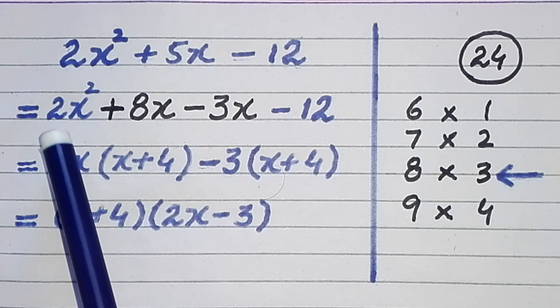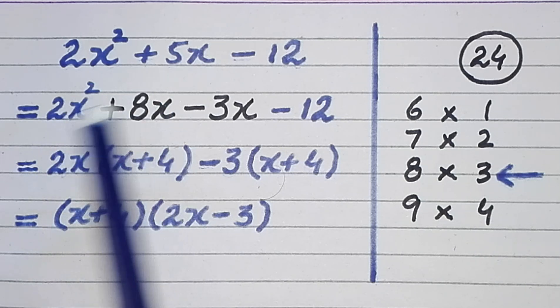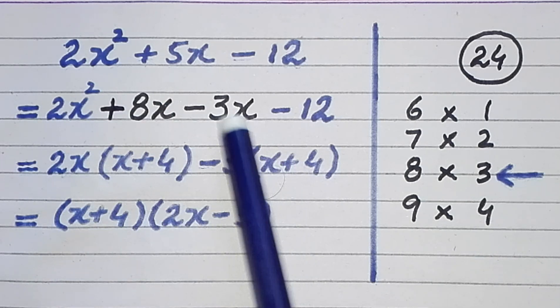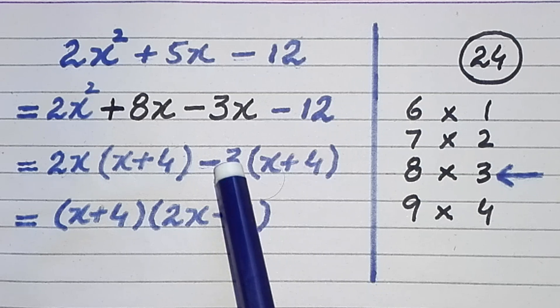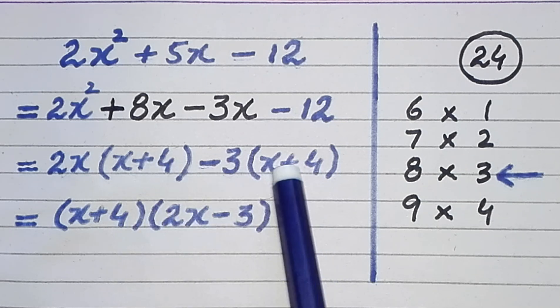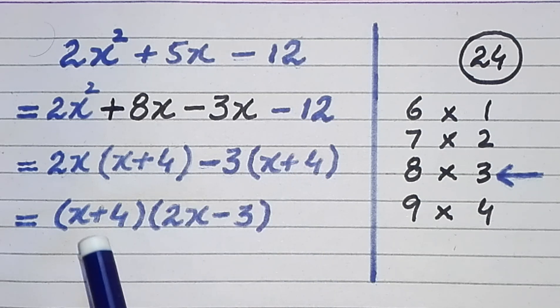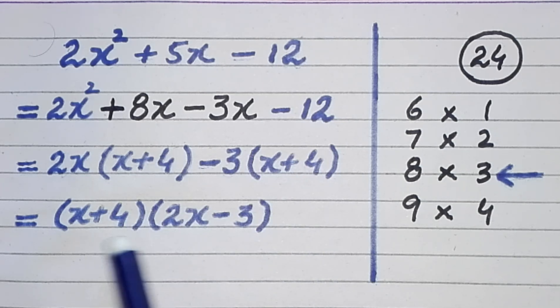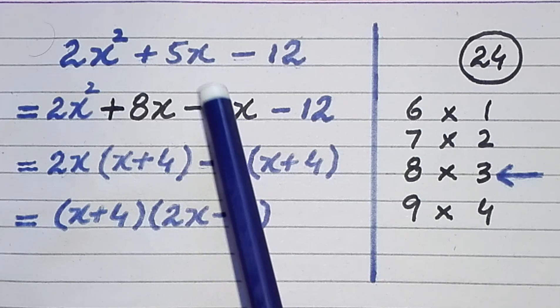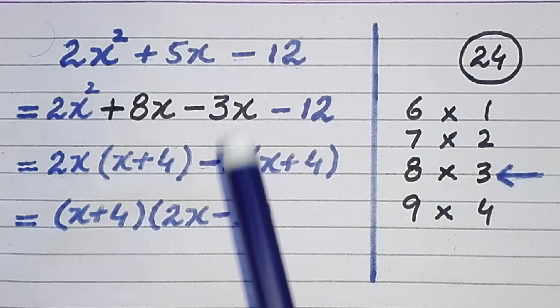First we take common from the first two terms, and then we take common from the last two terms. At the end this bracket is taken out as common. So these are the required factors of the given quadratic expression.